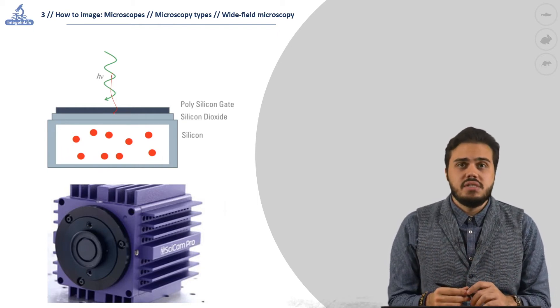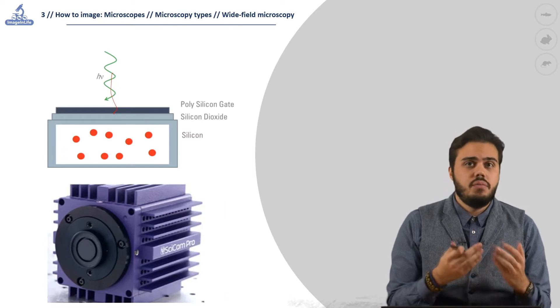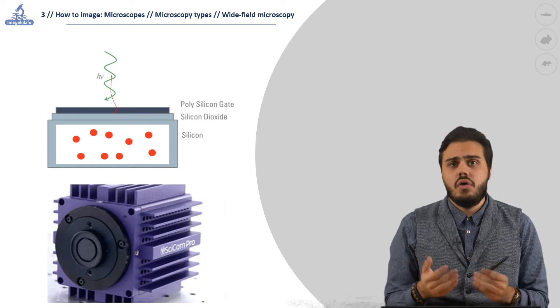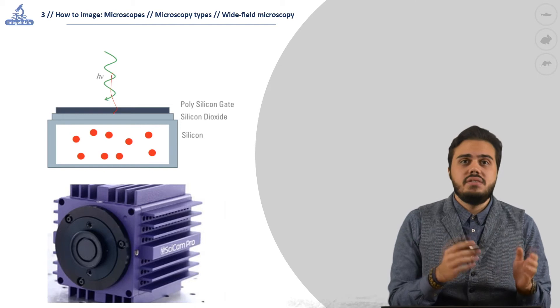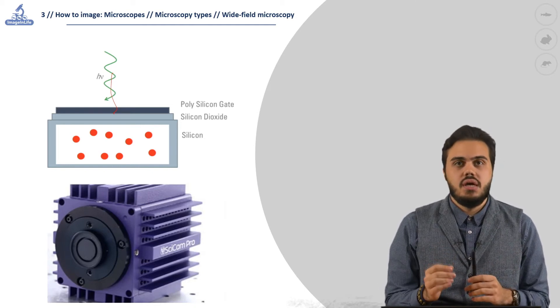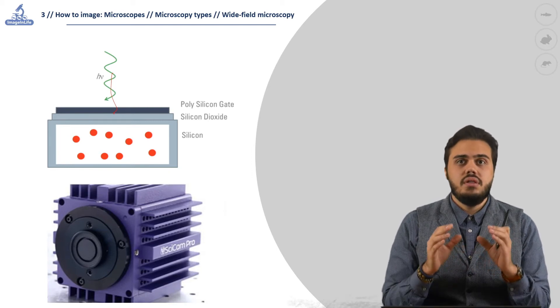The CCD cameras have a better noise-to-signal ratio, where the CMOS has a higher frame rate. EMCCD and sCMOS are the scientific evolution of normal cameras. The sCMOS have a poorer quality but can go up to 1000 fps, while the EMCCD are able to capture really dim signals.